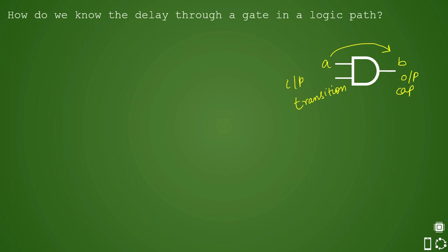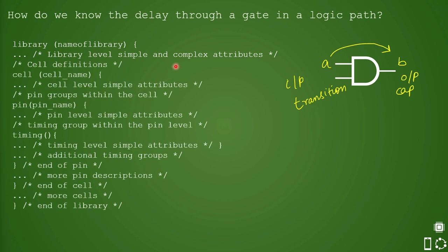Please note that timing data of standard cell is provided in the liberty format. What you see here is sample liberty format. So you can see that library name is given in the first line and here is the complete liberty format.